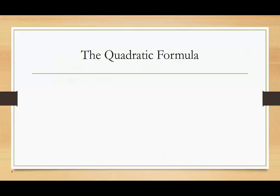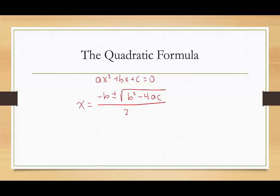To review the quadratic formula: if we have a quadratic equation in standard form, which would be ax squared plus bx plus c equals zero, then for any quadratic of this form, we can determine the zeros, or solve it, by saying x is equal to negative b plus or minus the square root of b squared minus 4 times a times c, all over 2a.